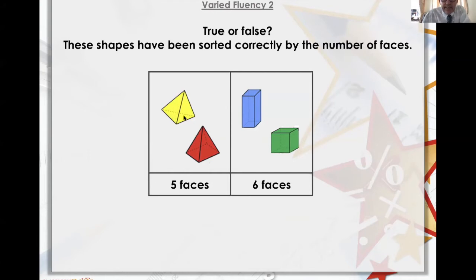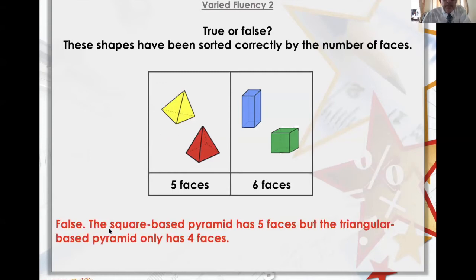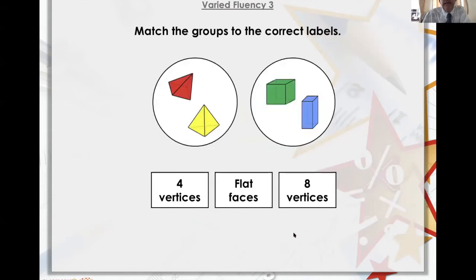That one's a triangular-based pyramid. It's only got three sides and a bottom. That one's got four sides and a bottom, so it's wrong. False. False. The square-based pyramid has five faces, but the triangular only has... Yeah, we can do this.